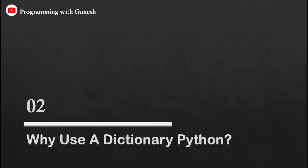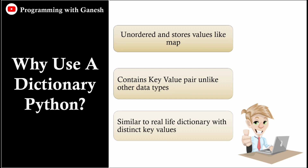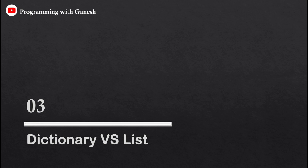Now let's see why to use the dictionary in Python. The dictionary stores values like a map and contains key-value pairs, unlike lists or tuples. It is similar to a real-life dictionary where alphabets are keys and their meanings are values. In Python's dictionary there is a key and we store single or multiple values to that key — we can use a nested dictionary, or a list, tuple, or set as a value.